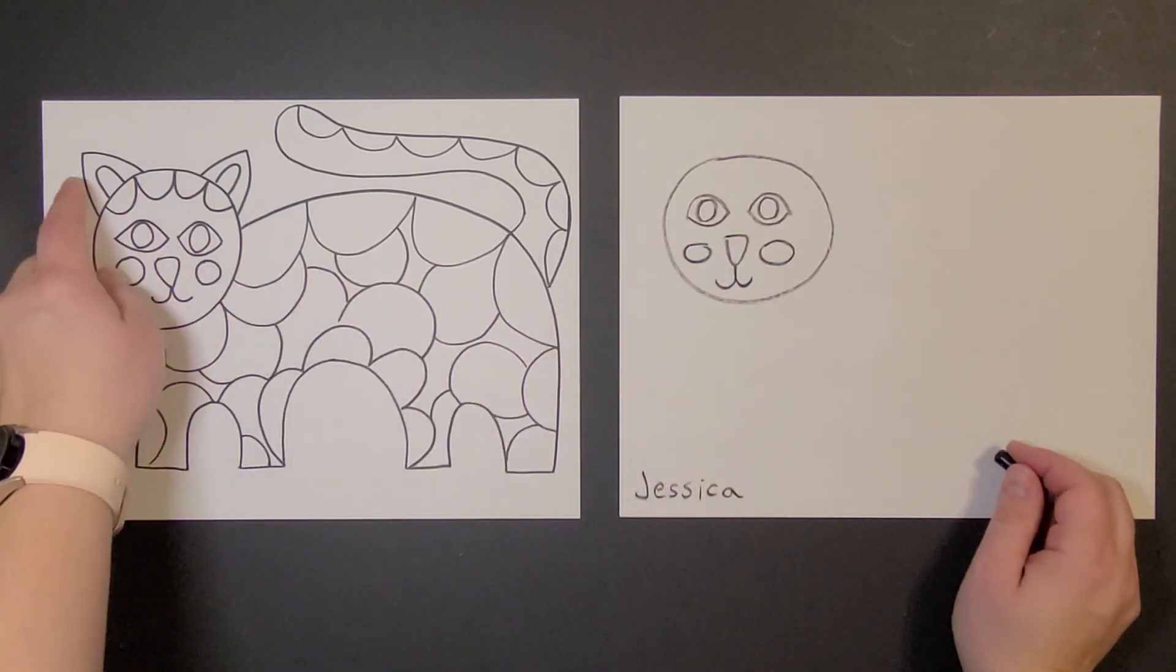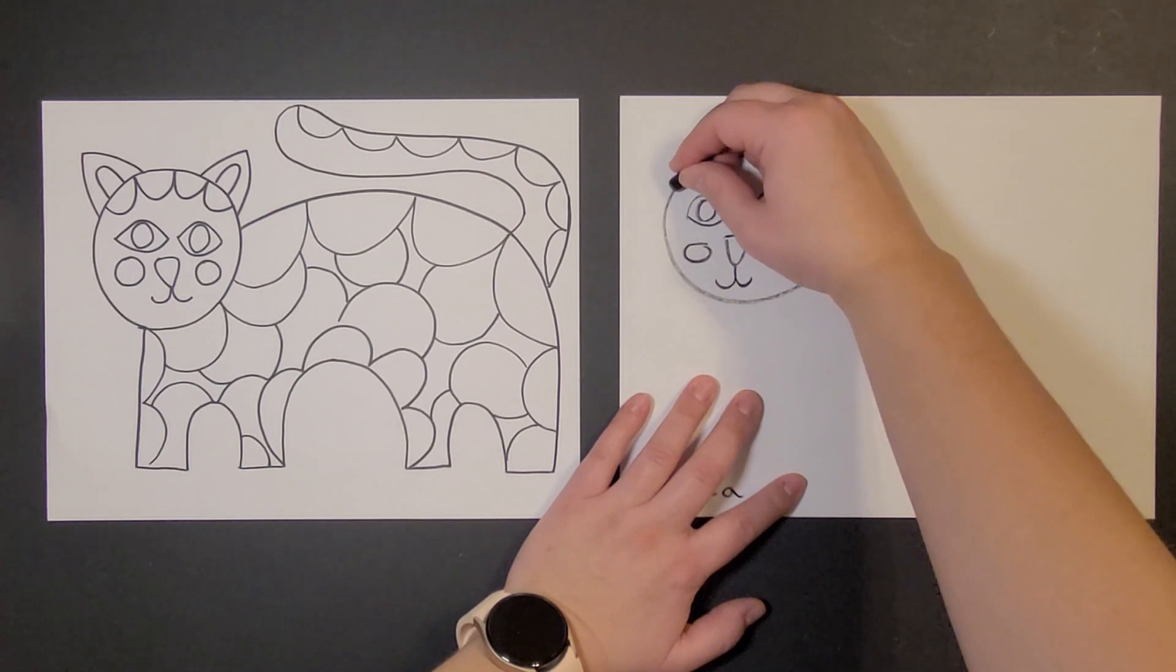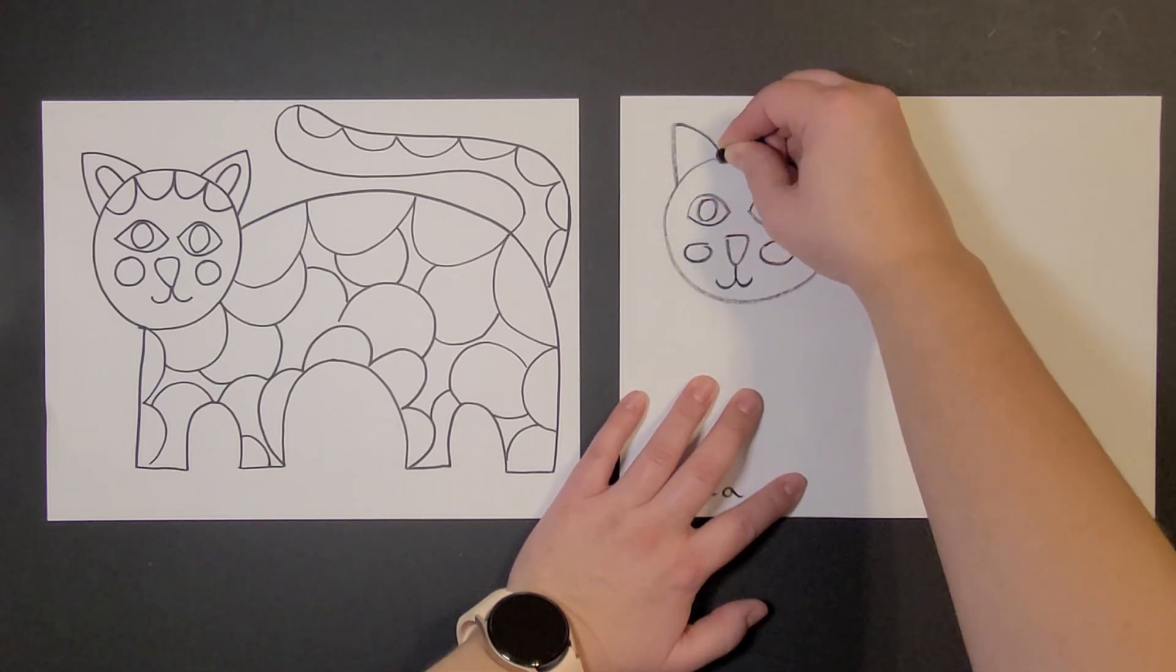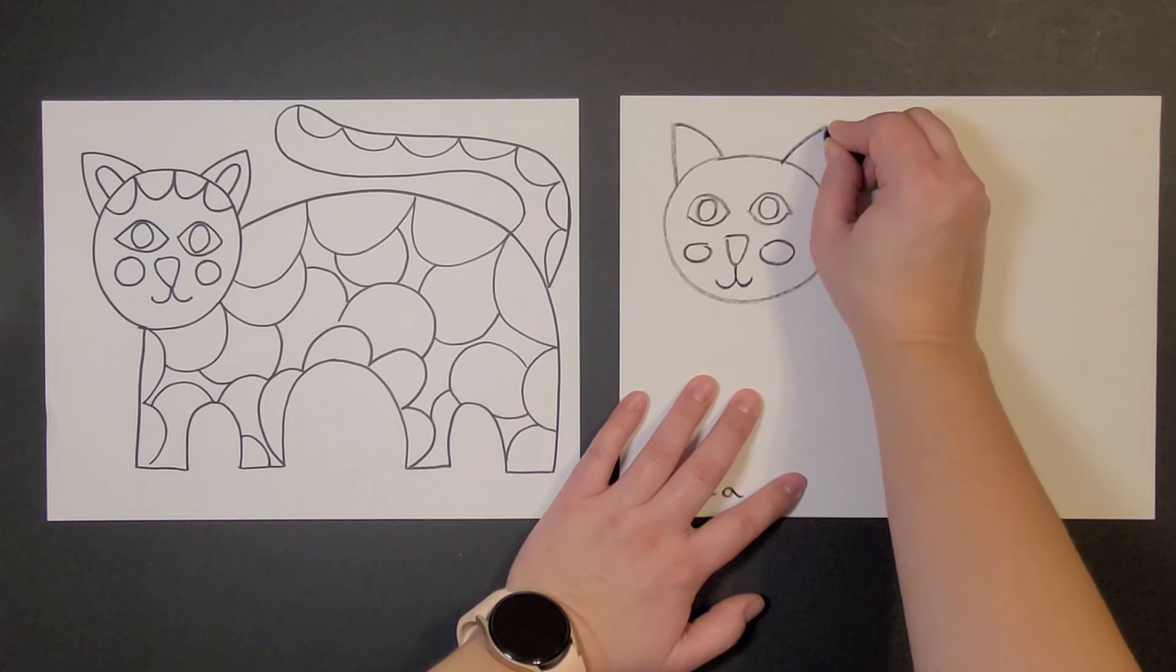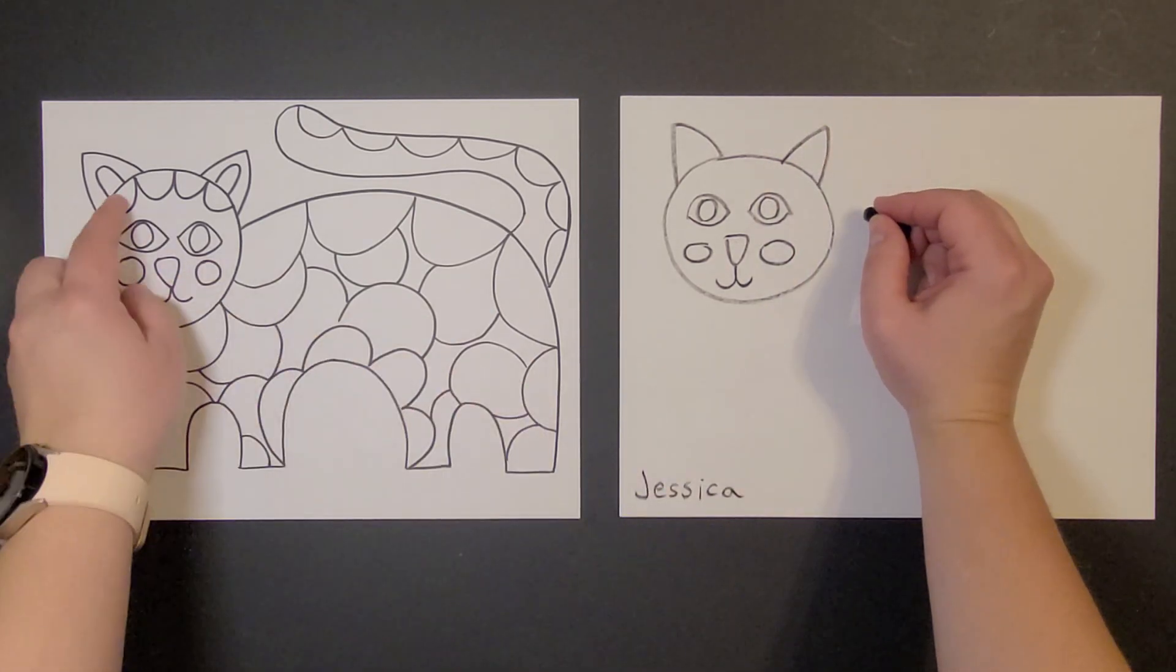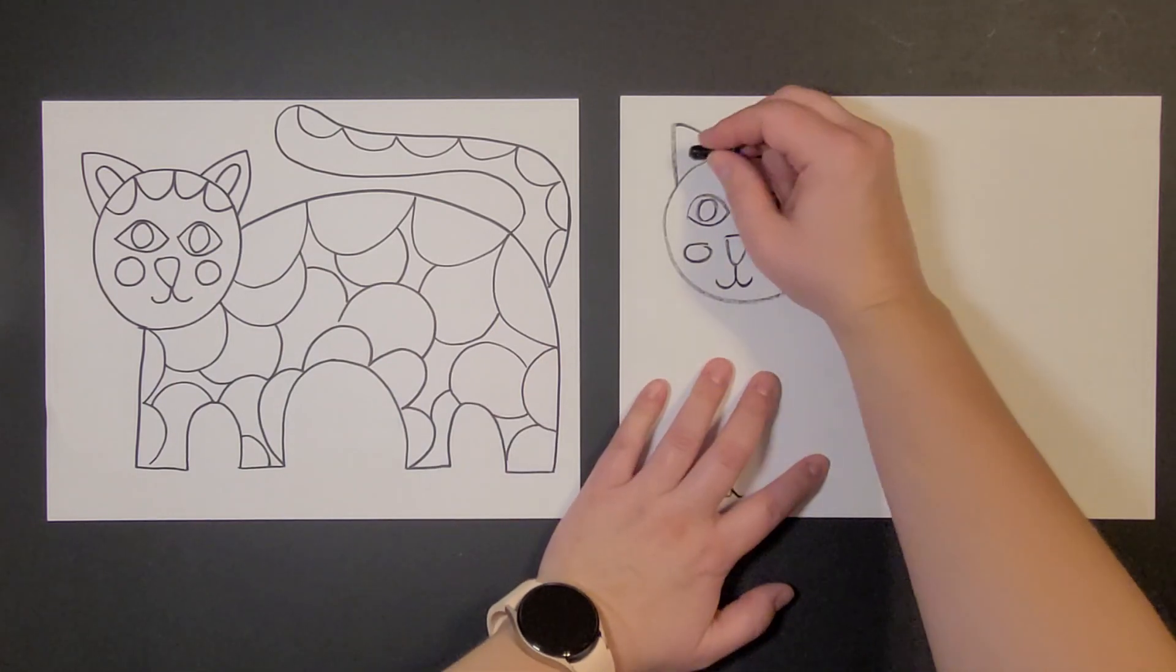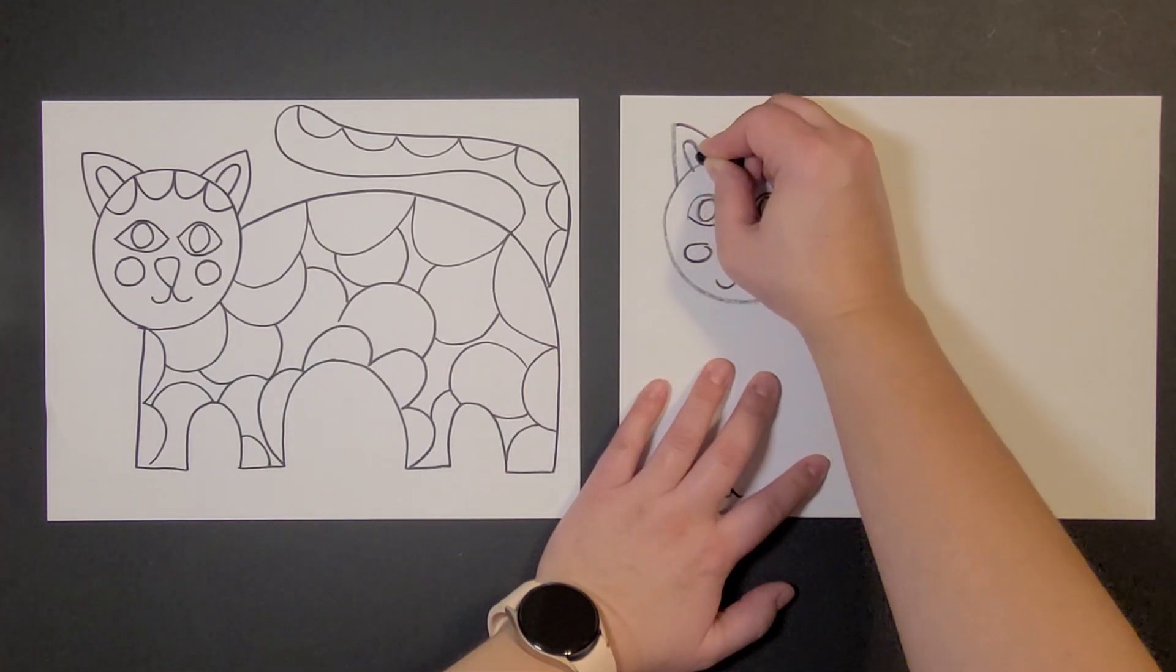And then I can do the ears. Those are just upside-down V's. And then some upside-down U's inside of the ears. Just like that.